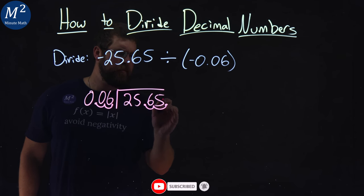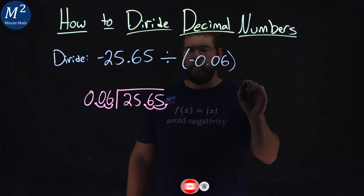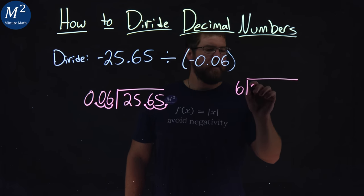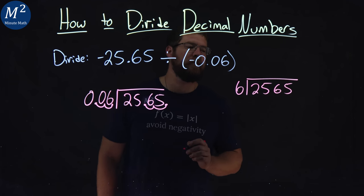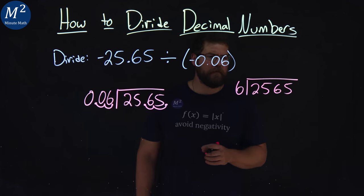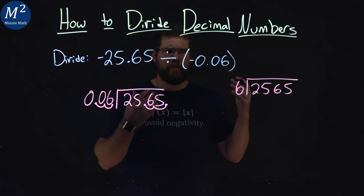1, 2. So if we rewrite that, we have a 6 goes into 25.65. And now I perform long division.